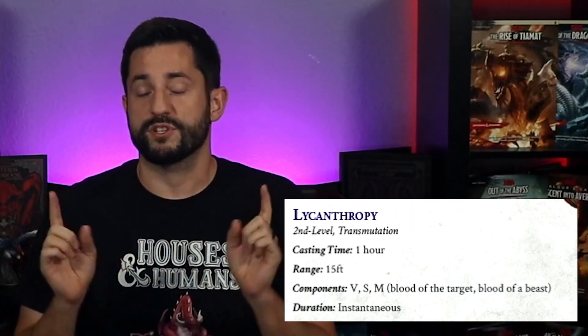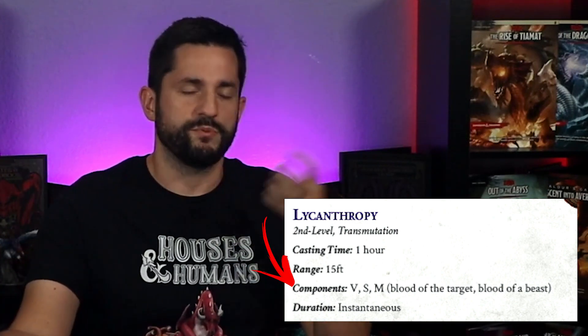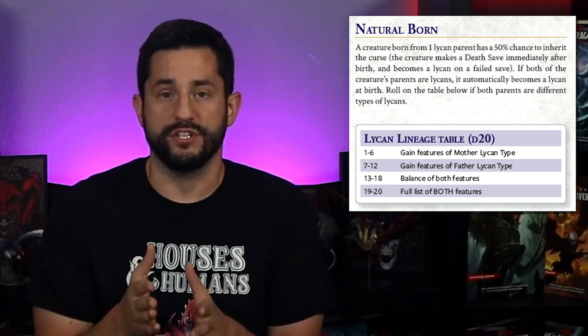We came up with a spell for lycanthropy, where spell components are the target's blood and a creature's blood — which would be your bestial creature of the lycanthropy form that you get. Or of course you get bit by a lycan. Either way, you have to make a constitution saving throw, and on a failure you are infected with lycanthropy. Or the third way would be that you are born a lycan — either your mother or father were a lycan and it transferred onto you. I have a table in there to see if the offspring is a lycan or not, or if two different lycans of two different species — maybe a wolf and a badger — had a lycan child that takes on traits of both.